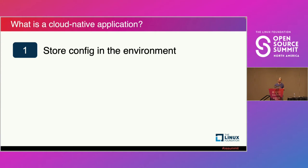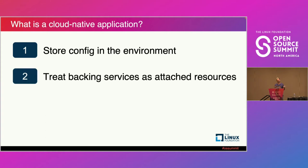A cloud native application needs to store configuration in the environment. A bad practice in development is hard-coding variables or anything you need for configuration as part of your code. With Kubernetes we have a lot of options to do this — ConfigMaps, Secrets, etc. So the first thing to do when building a cloud native application is to remove all hardcoded values from your existing app, and keep configuration separate from the code.